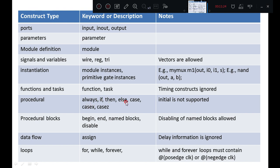Procedural constructs allowed include always, if-then-else, case, casex, casez. The initial statement is not supported; if you want to initialize variables, you must use a reset mechanism within the coding to initialize the ports. Procedural blocks begin/end, named blocks, and disabling of named blocks are allowed. Data flow: the keyword assign and data flow statements are allowed, but delay information mentioned in assignment statements is ignored. Loops: for, while, and forever are allowed constructs. While and forever loops must contain a positive or negative edge of clock when converting to synthesis or gate level network.